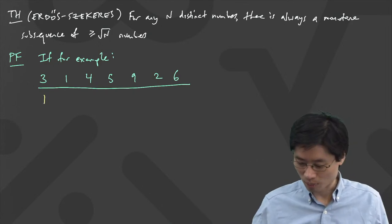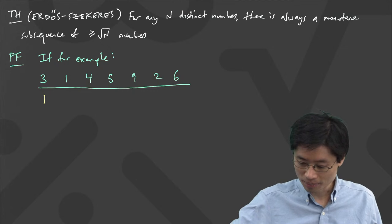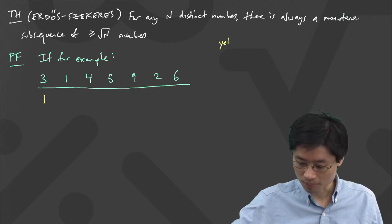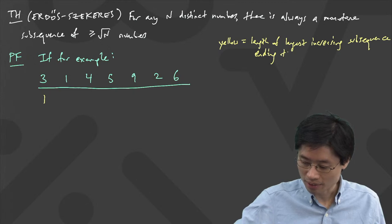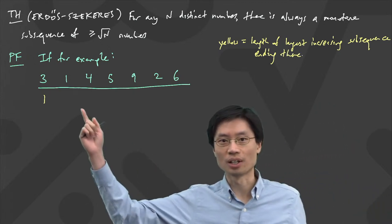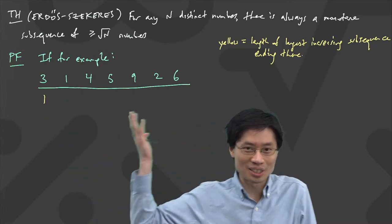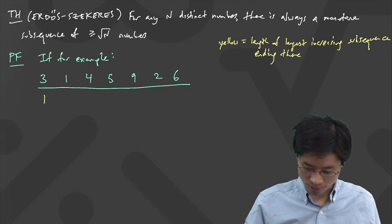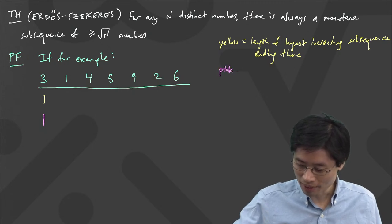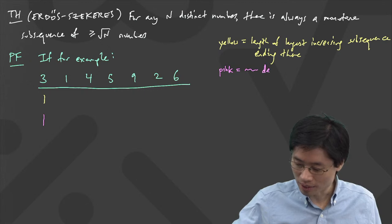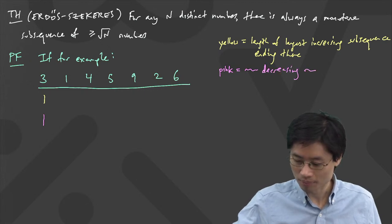Under those numbers, I'm going to write one number which is the length of the longest increasing subsequence that ends at that number. So I'll write a one. The yellow number equals the length of the longest increasing subsequence ending there. For example, the longest increasing subsequence that ends at the three is just one — it's just the three. And I'll also write a red — well, pink — number, which is the same thing but for decreasing.